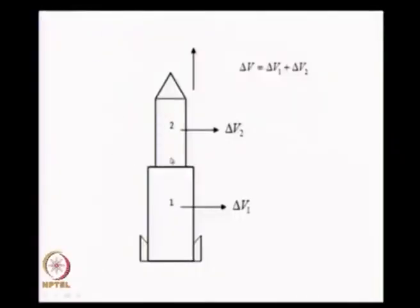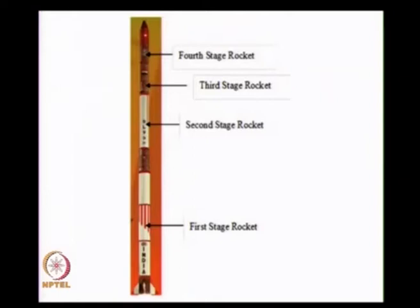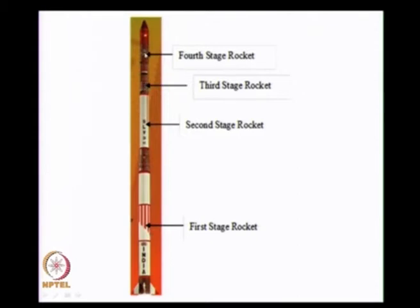Here we see a two-stage rocket — the first stage gives velocity delta v1 and the second stage gives velocity delta v2. The total velocity is delta v = delta v1 + delta v2. This is the first rocket designed at VSSC Trivandrum. Work was done from around 1970 to 1978, and the first successful launch was in 1980. It was a simple four-stage rocket — the first stage was solid propellant. I will give you a problem involving this rocket.